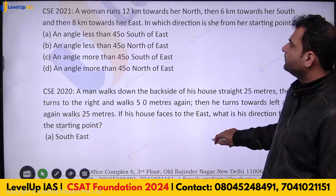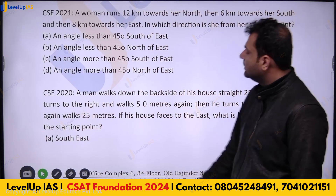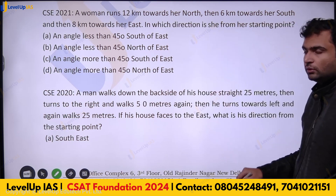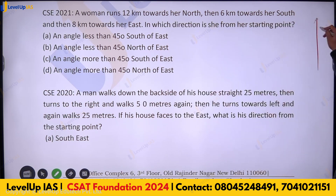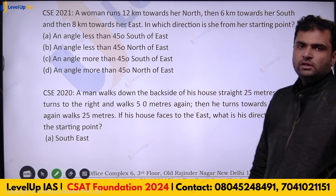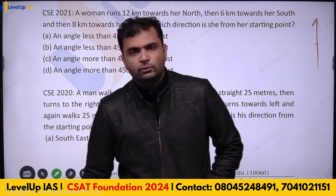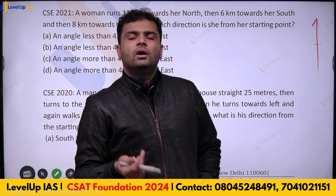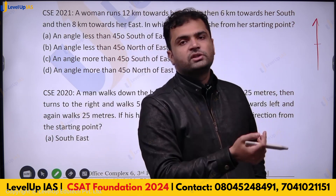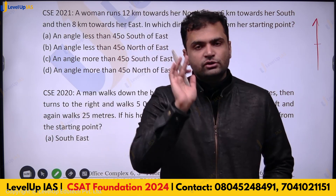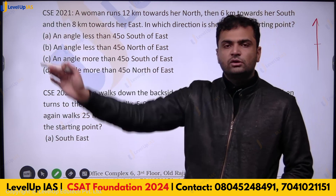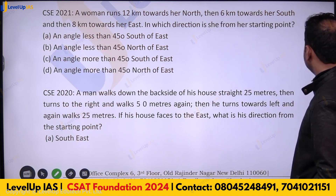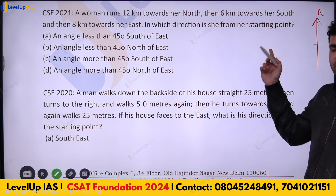Next question: A woman runs 12 kilometers to her north. When it comes to north, east, west, south — everybody's north is the same. It does not happen that person A's north is different from person B's north. North means the direction towards the north pole, and we assume as in maps that this is north.